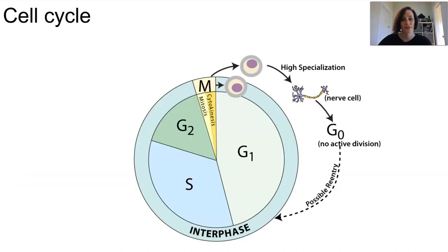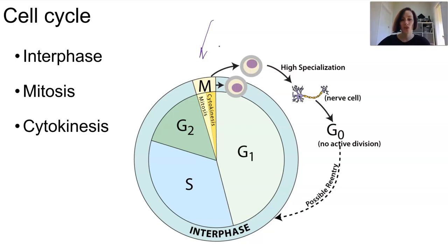Now the cell cycle has a few main parts: Interphase, which is basically all of that circle there; Mitosis, which is just this tiny section; and cytokinesis, which is part of mitosis. In interphase, the cell is preparing for normal functioning or preparing for growth. In G1, this is where active growth is happening. In S phase, this is synthesis where DNA is replicated, and G2 is preparation for that mitosis phase or dividing.